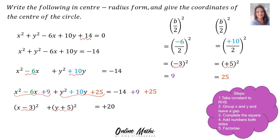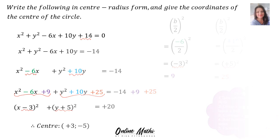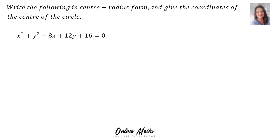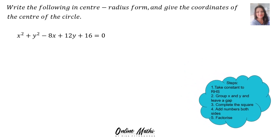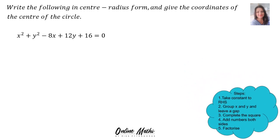We wrote this in centre radius form and we still need to give the coordinates of the centre, or the midpoint of the circle. Therefore, the midpoint will be plus 3, negative 5. Example 2: write the following in centre radius form and give the coordinates of the centre of the circle. Step 1: take the constant to the right-hand side. Therefore 16 walks across and becomes negative 16.